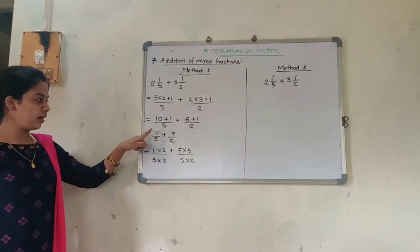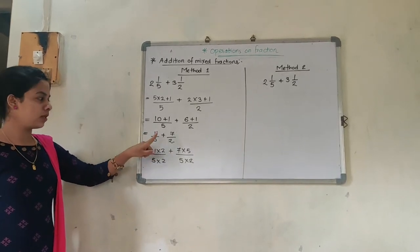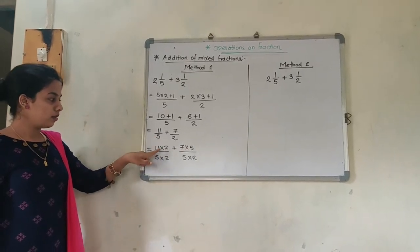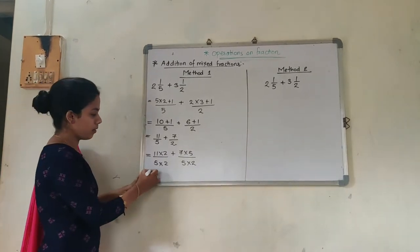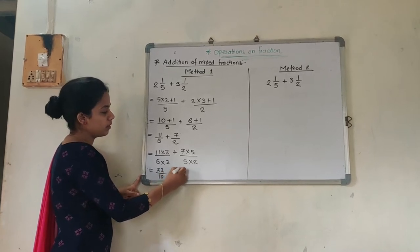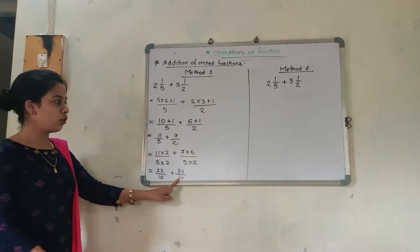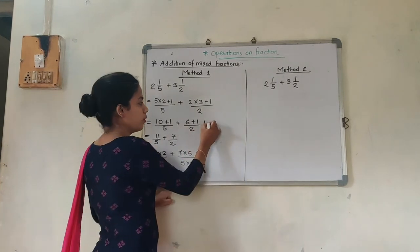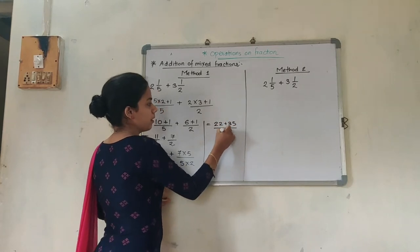Just see again: 11 into 2, plus 5 into 7 — both sides the denominators are 5 into 2. Now, 11 into 2 is 22 upon 10, plus 35 upon 10. Now see — the denominators are the same. If denominators are the same, I am going to keep the denominator common and add the numerators.